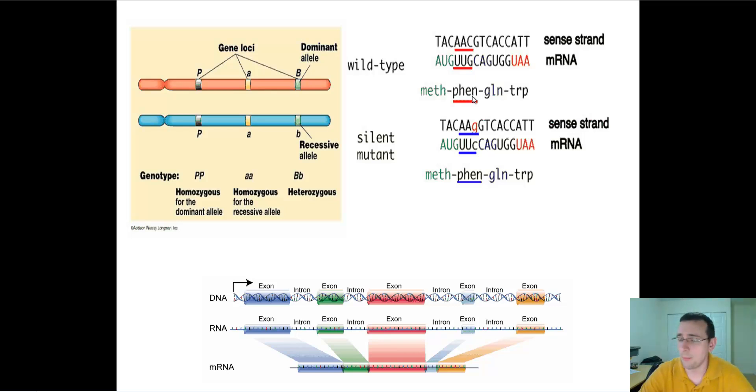Sometimes also epistatic effects which are one gene affecting another or multifactorial traits which is a trait that depends on many genes will also mask the effect of one single mutant gene might not necessarily make that much of a difference. So you see a lot of things will play into whether or not a mutation will actually be seen in the population.